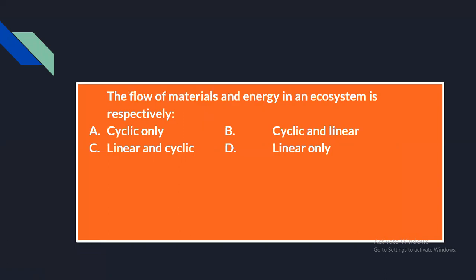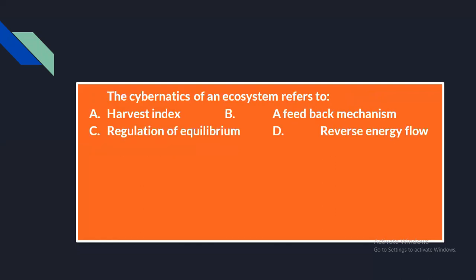The next question: the flow of materials and energy in an ecosystem is respectively — option A: cyclic, option B: cyclic and linear, option C: linear and cyclic, option D: linear. The answer is cyclic and linear. Energy flow is linear — it does not cycle back — while material flow is cyclic, returning through decomposition.